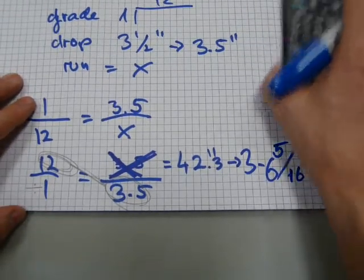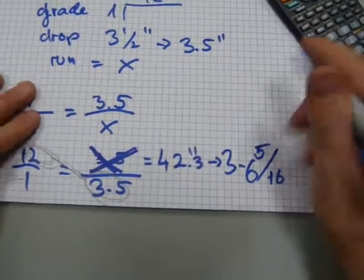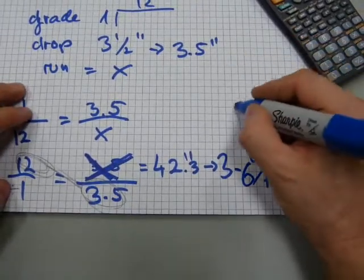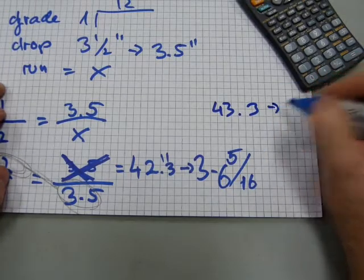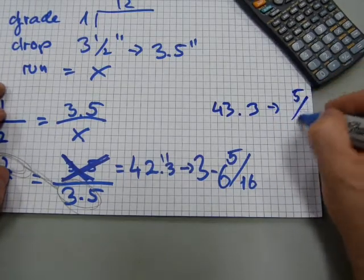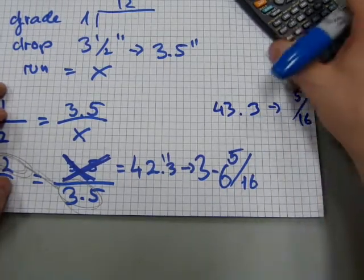If you have, say, instead of 42 inches, how about 43.3 inches? Again, that 0.3, same as before, becomes 5 over 16th of an inch. And the 43, this is what you can do with the 43.